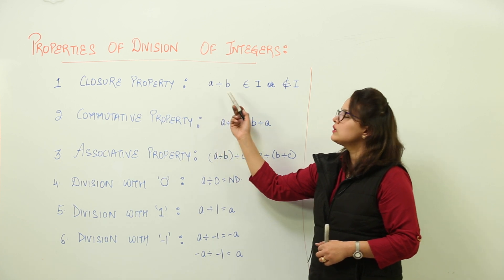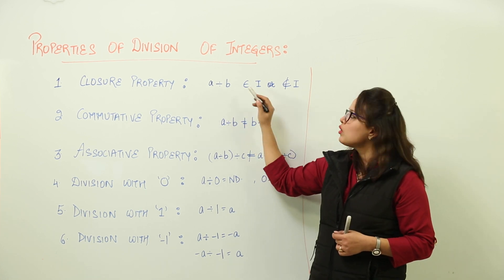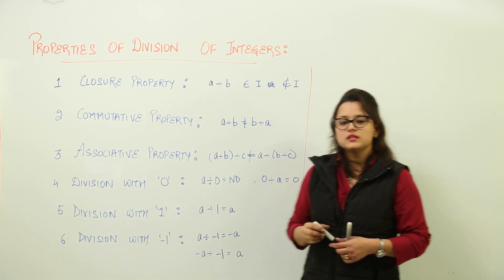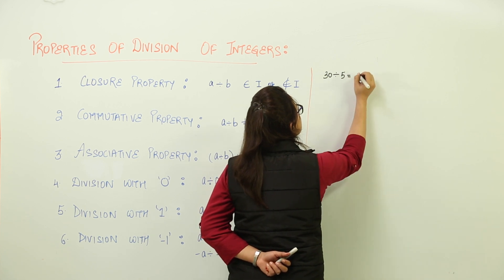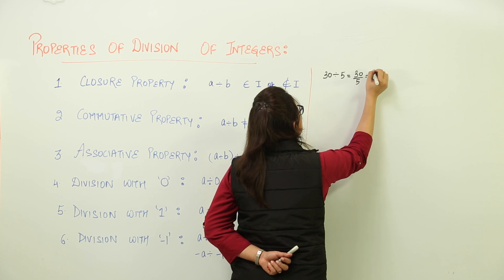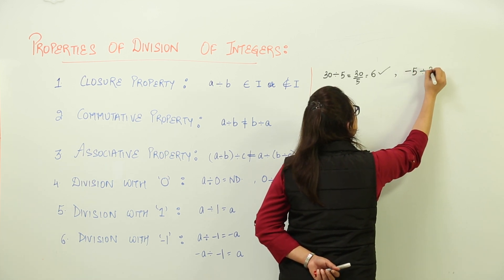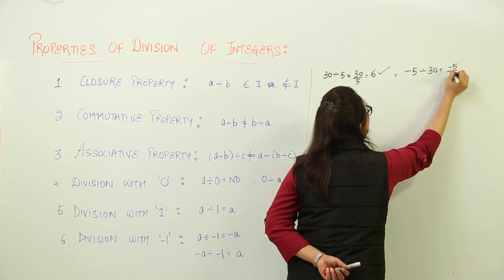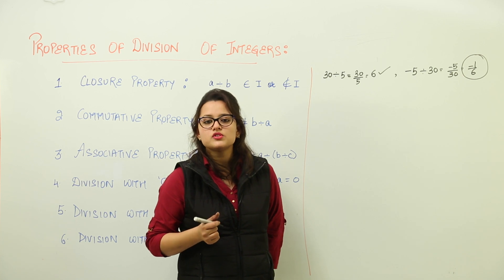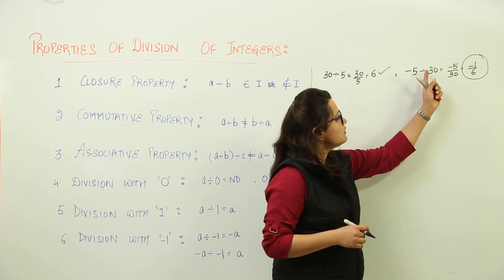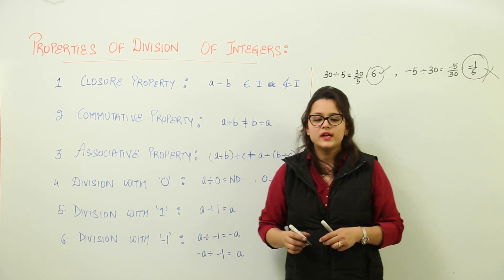Let us start with the closure property. The closure property tells us that when you are dividing two integers, the quotient may or may not belong to integers. For example, 30 divided by 5 gives 6, which is an integer. But minus 5 divided by 30 gives minus 1 by 6, which is not an integer — it forms a rational number. So the division of two integers may or may not give you an integer. That was the closure property.